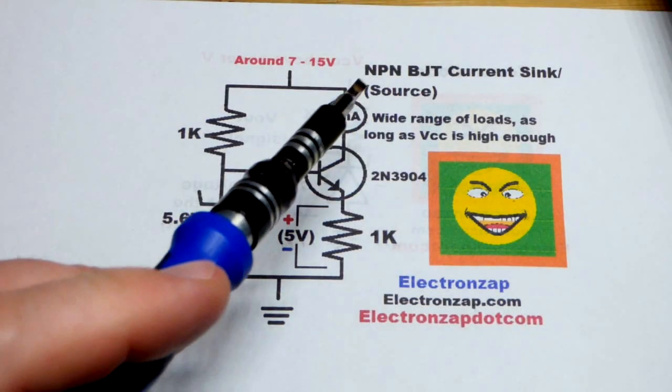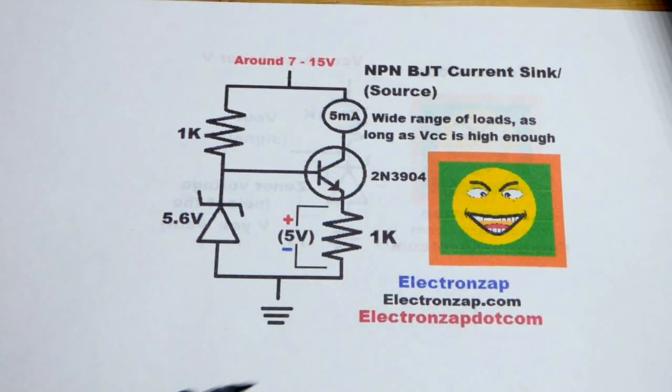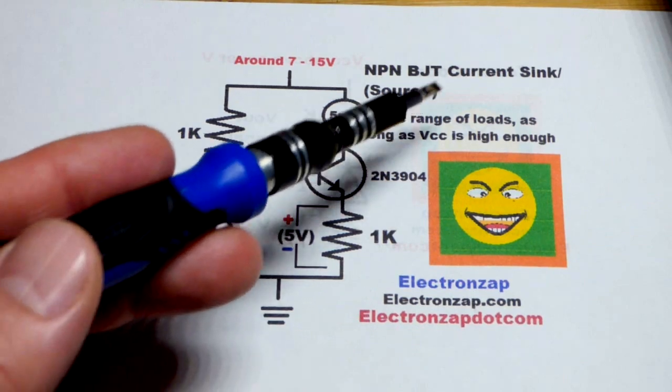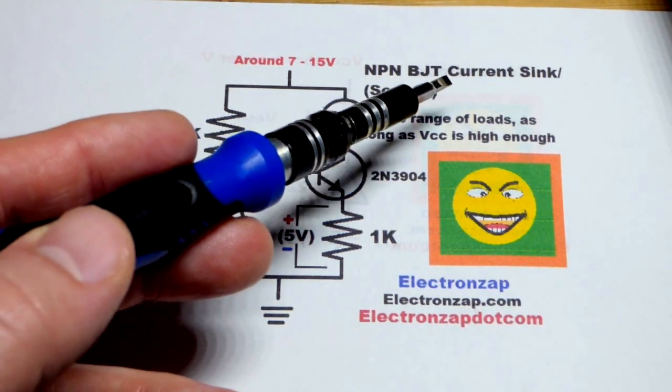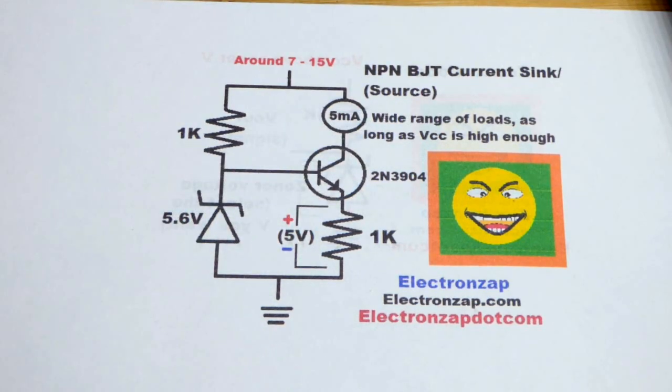So now in this video, we're going to make an NPN bipolar junction transistor current sink. You can also call it a current source. Whenever you set a current, it's often just called a current source.